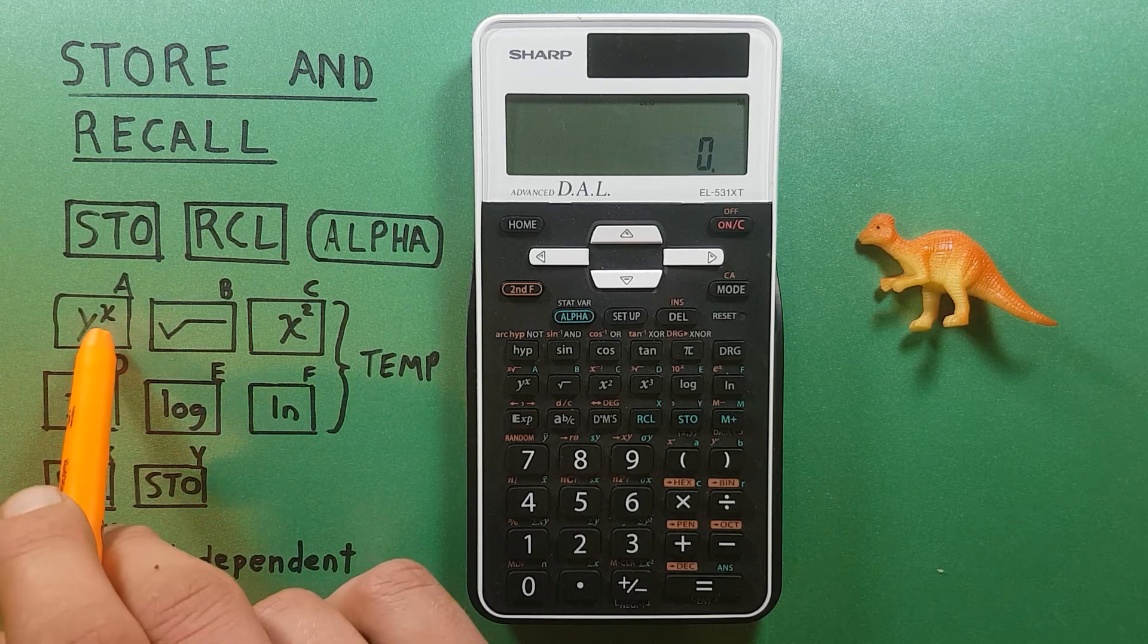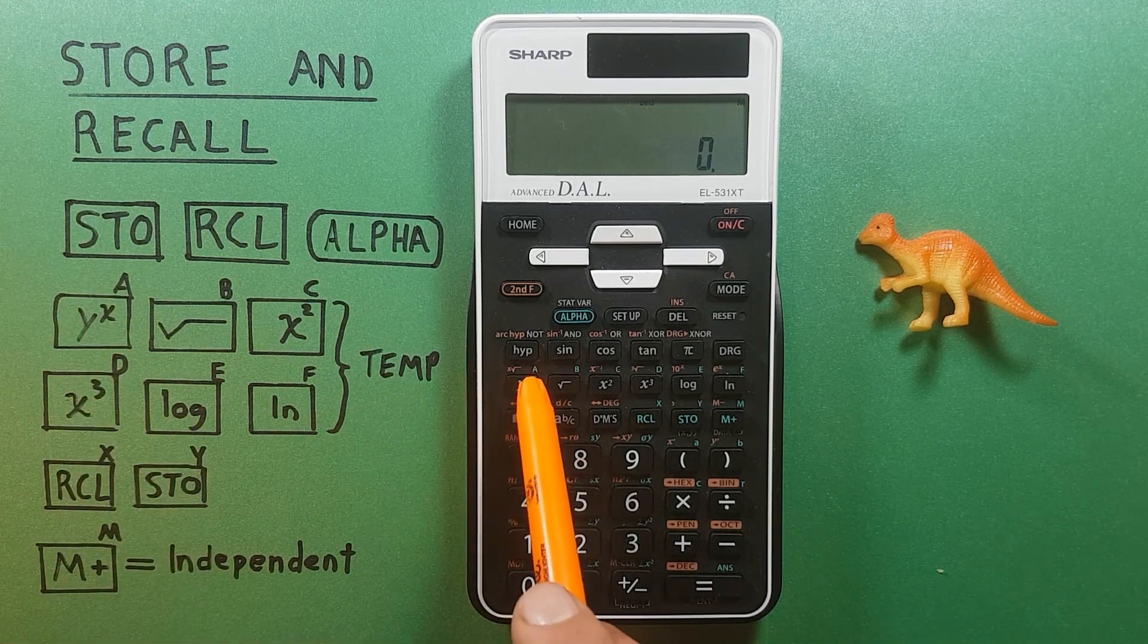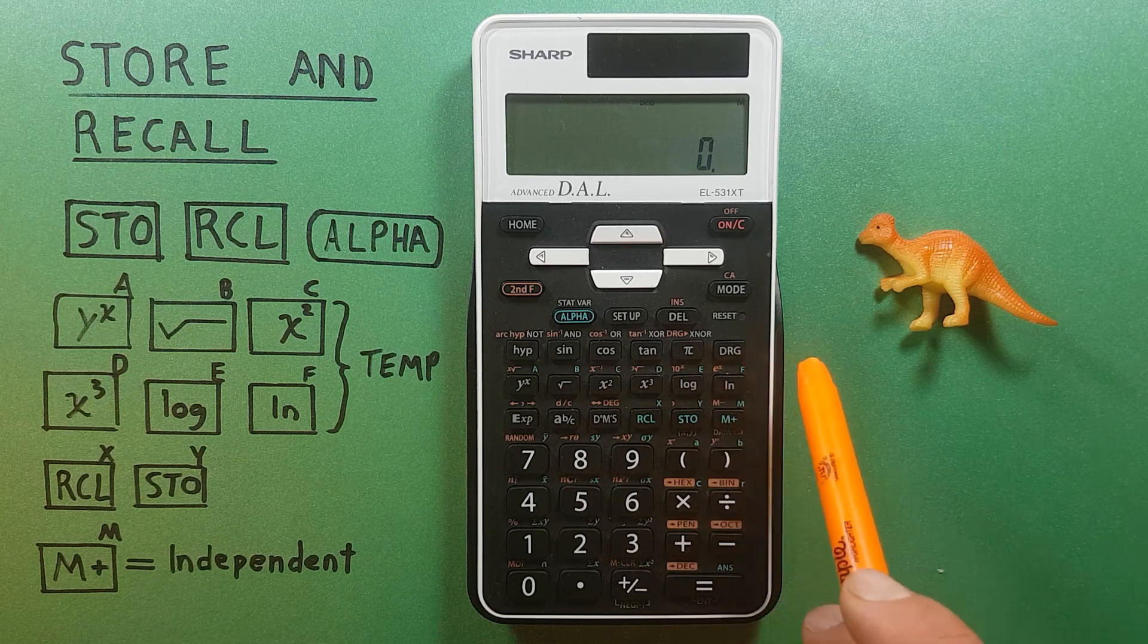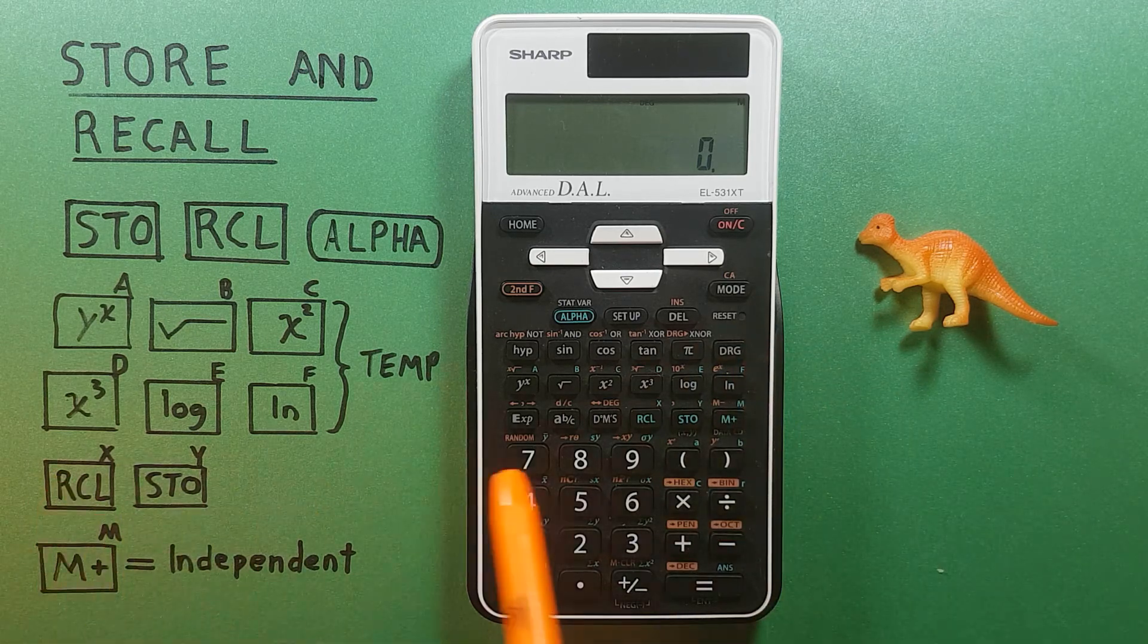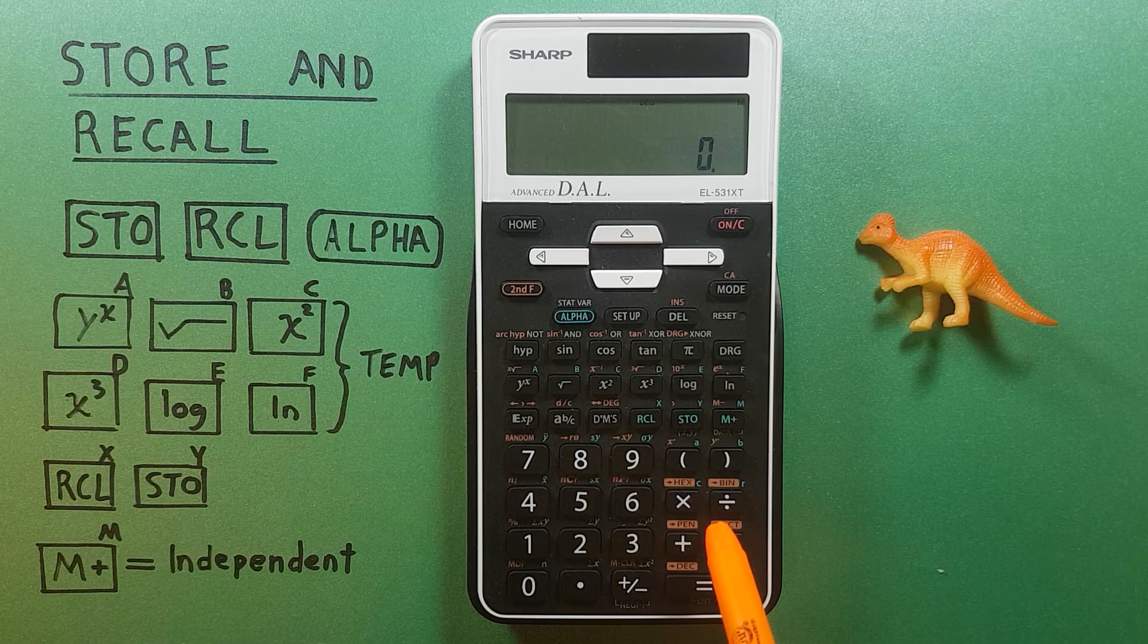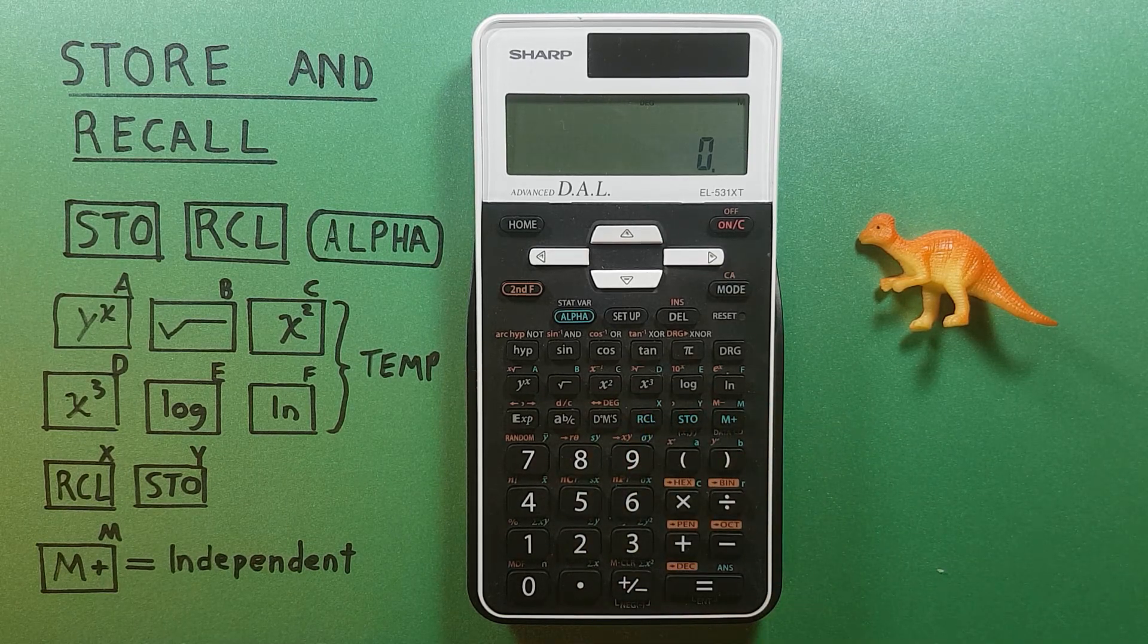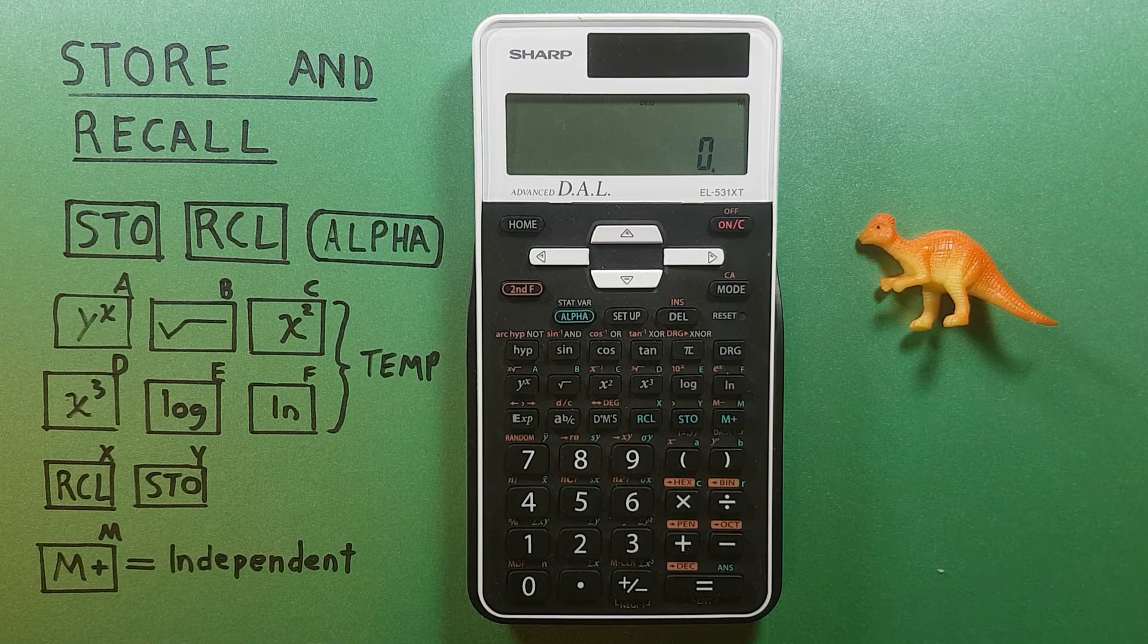Look at it here: A, B, C, D, E, and F. It also has two more lettered X and Y located here, but I would recommend against using these ones because they can be overwritten when doing other calculations.